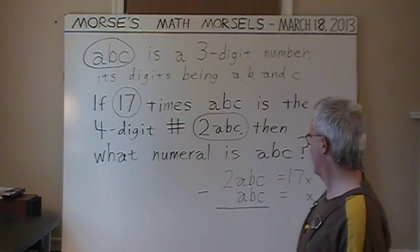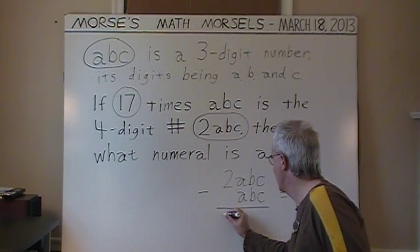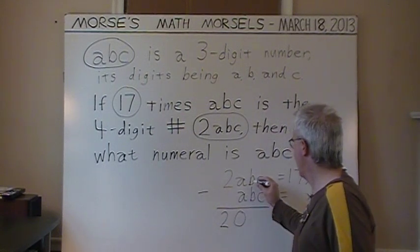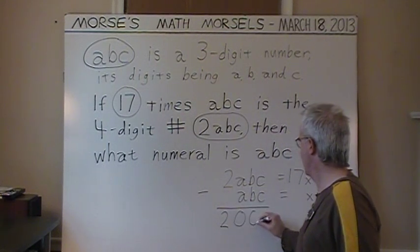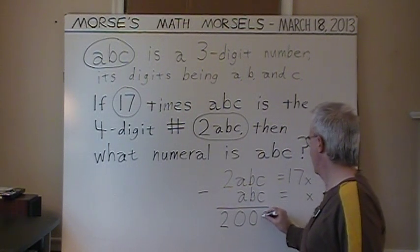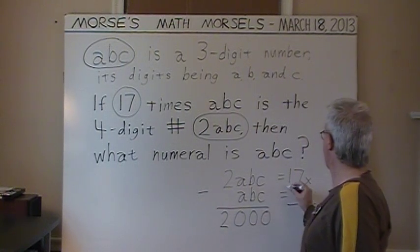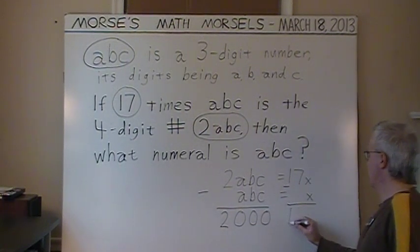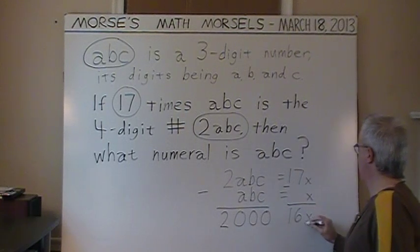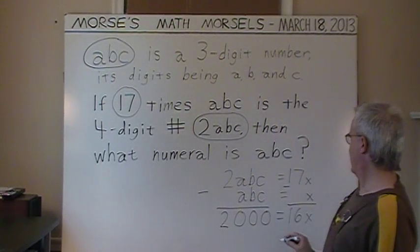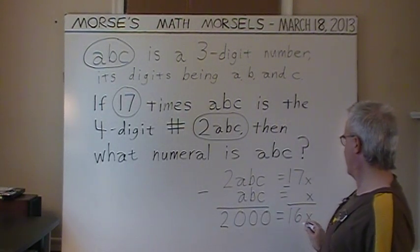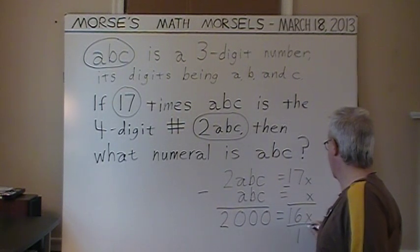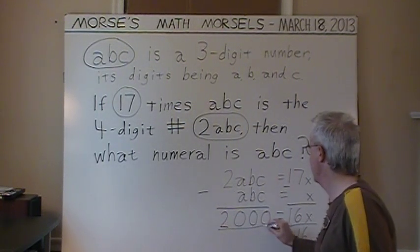When we do the subtraction, we're left with the 2,000. A minus A is 0. B minus B is 0. C minus C is 0. And taking away X from 17X is 16X. So 2,000 is 16 times some number X. Dividing through by 16 on each side.